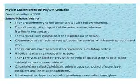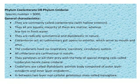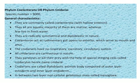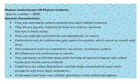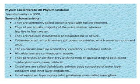Now Phylum Coelenterata, or Phylum Cnidaria — they have about 9000 species according to the first-year syllabus. Their general characteristics are shown in this figure. They are commonly known as Coelenterata because they have a hollow enteron, therefore known as Coelenterata. They are all aquatic — the majority are marine, while some live in fresh water. They are radially symmetrical, meaning the body can be divided into two equal halves along the main axis. They are diploblastic — 'diplo' means two, 'blast' means layer — having two body layers: ectoderm (outer) and endoderm (inner).